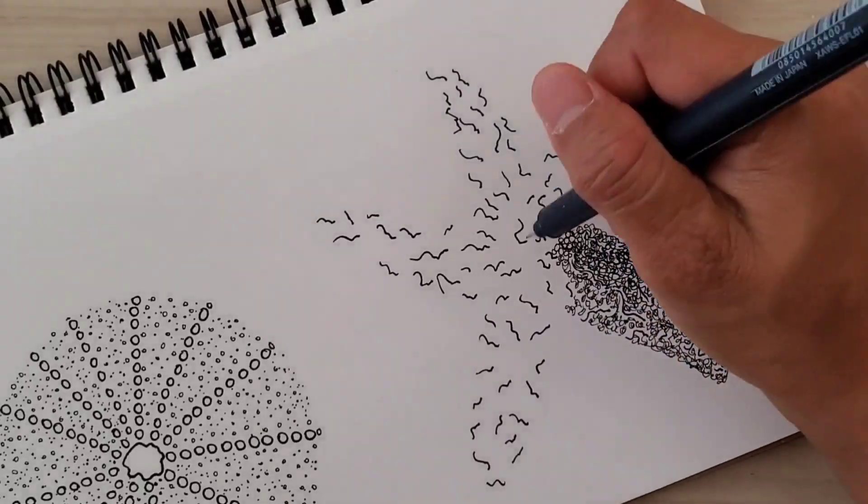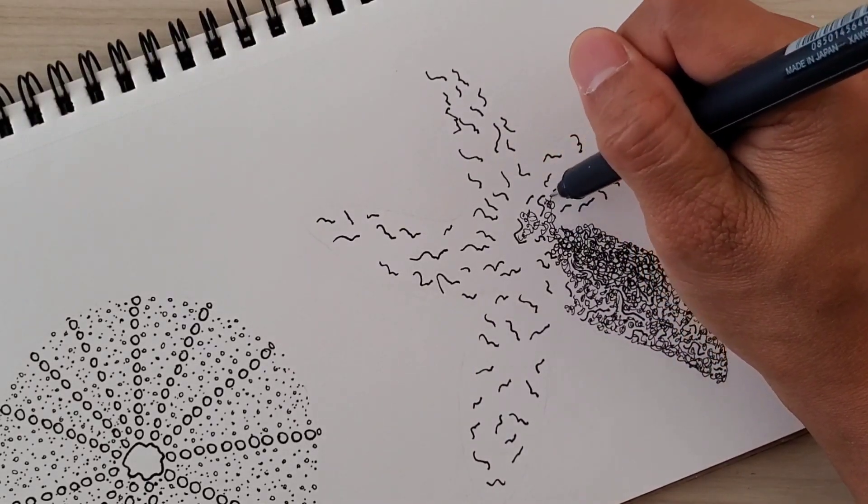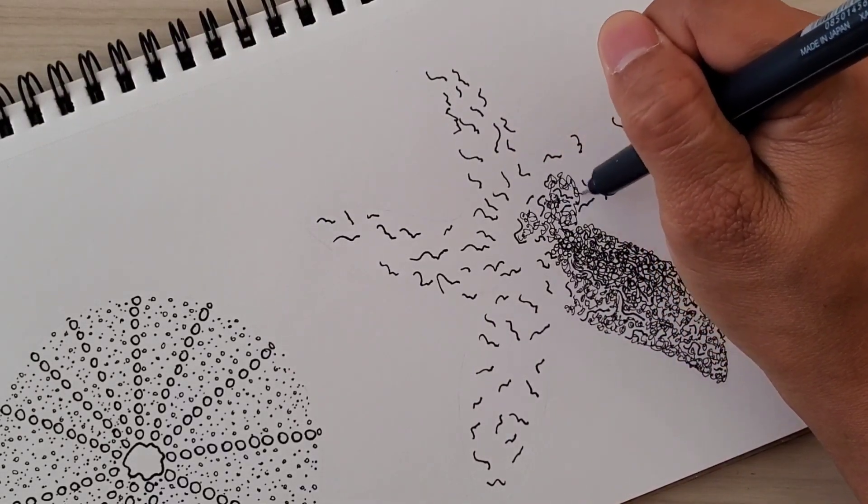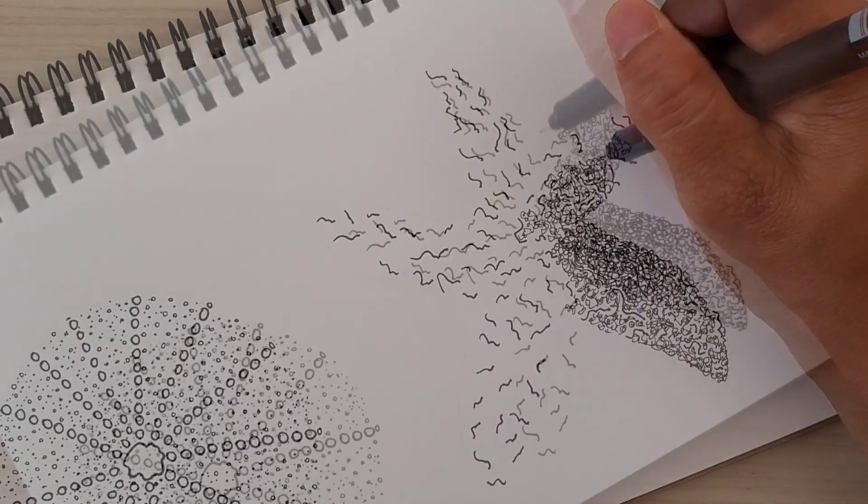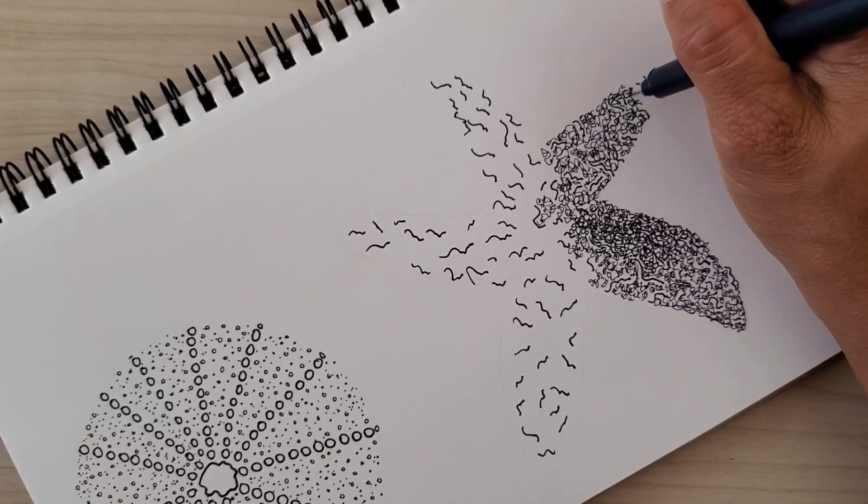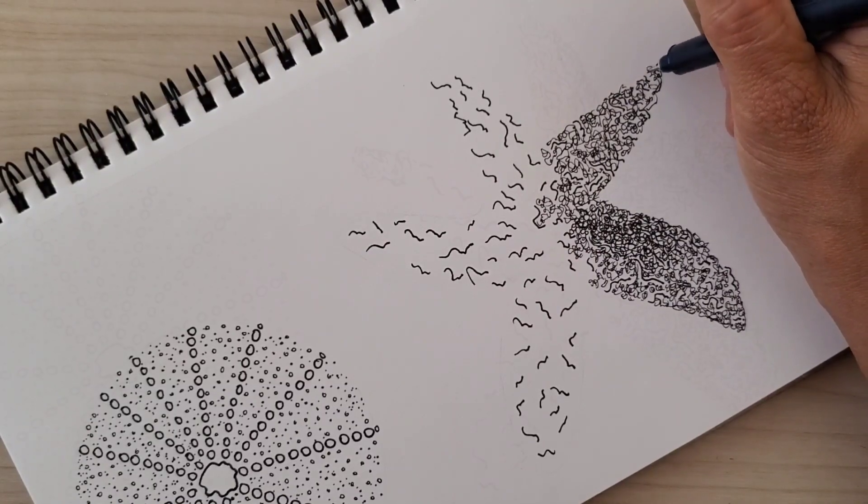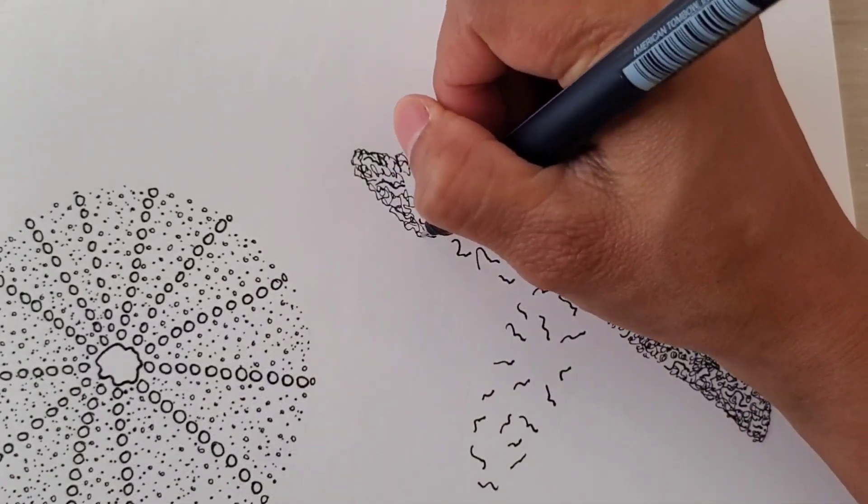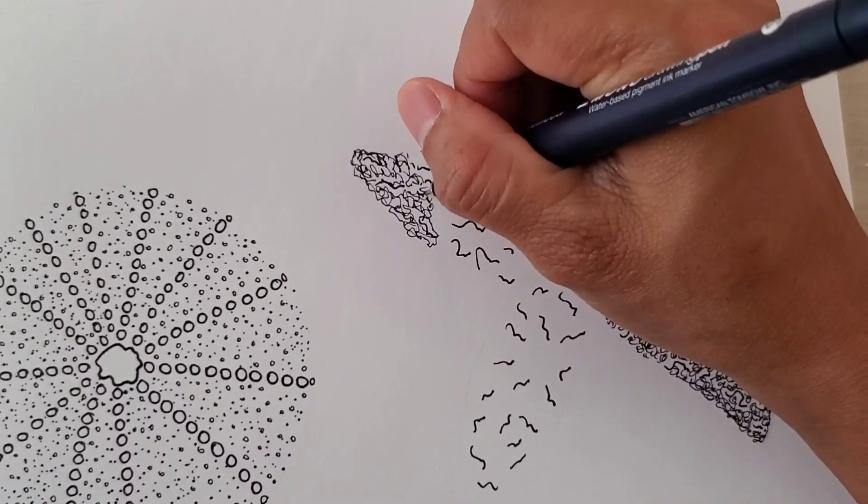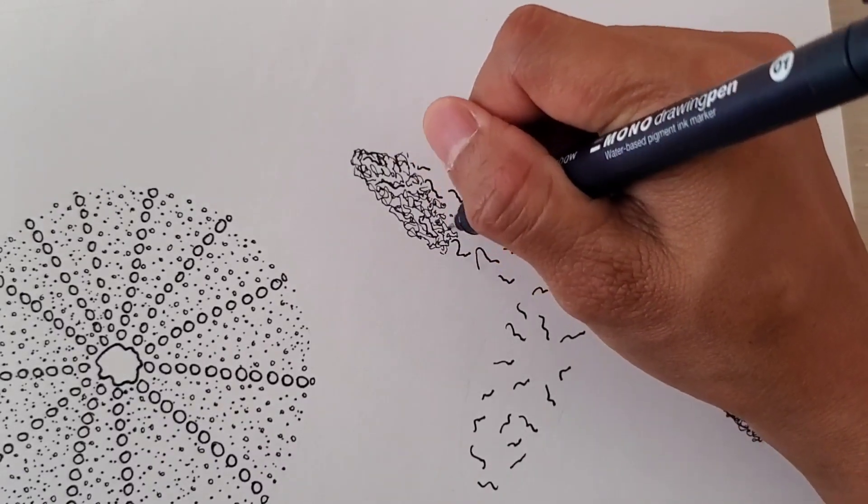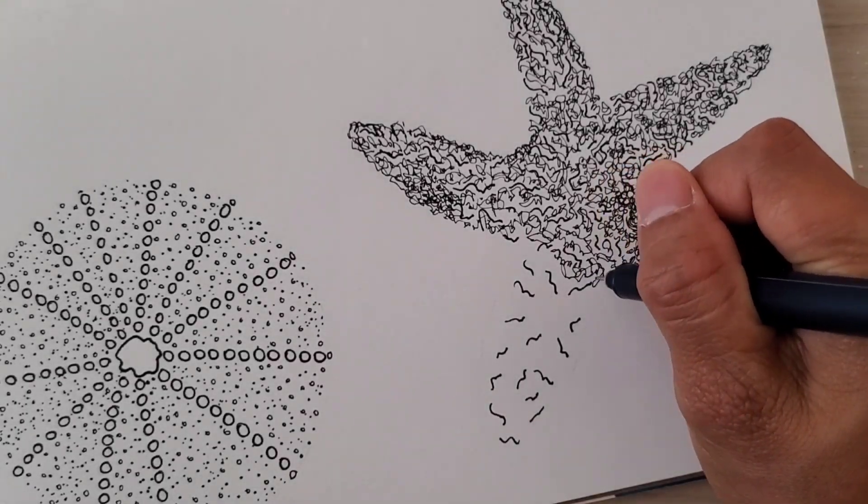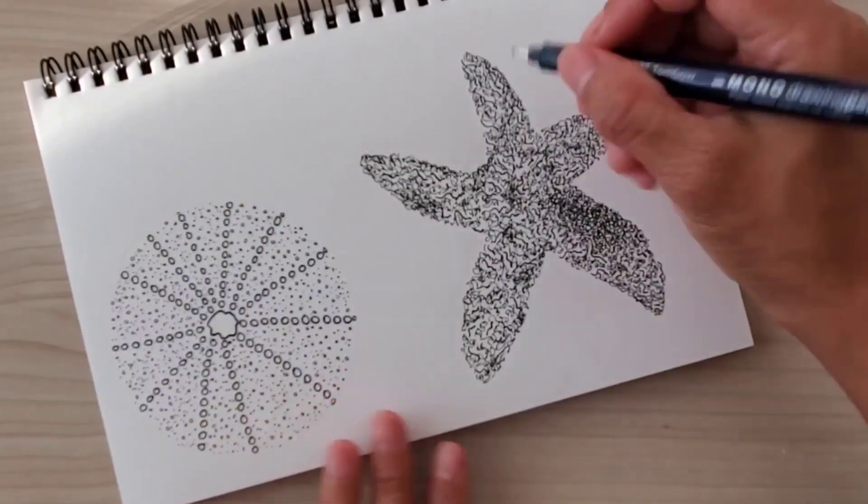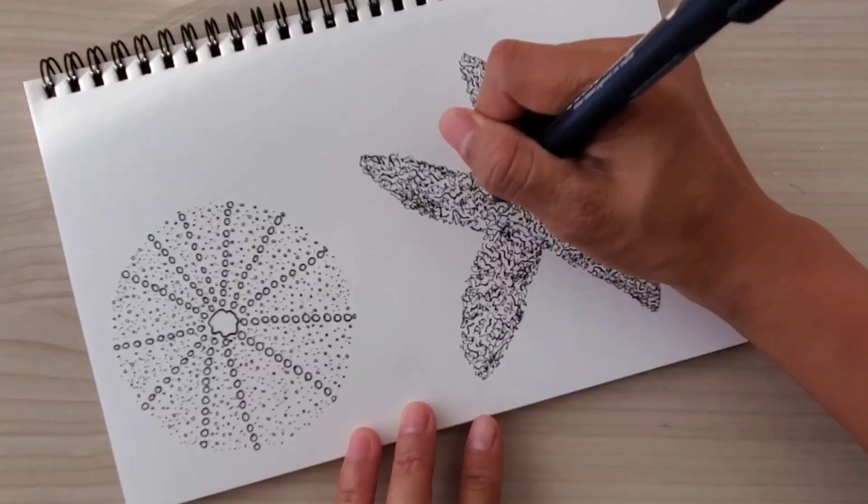Right now I'm just really using squiggles or random lines and it is so fun because you don't have to outline it again. By just drawing random lines, it doesn't have to be super precise or perfect, just fill in the shape.